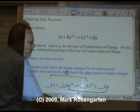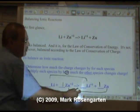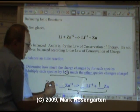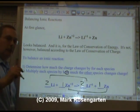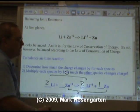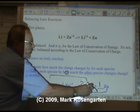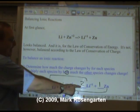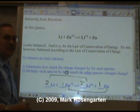Multiply each species by how much the other species change charge. Lithium changed by one, multiply zinc by one. Zinc changed by two, multiply lithium by two. Look what that does. Plus two on this side, two times plus one on that side. We have the law of conservation of charge obeyed and the law of conservation of mass obeyed.